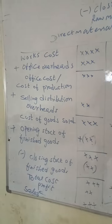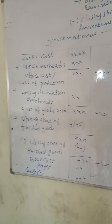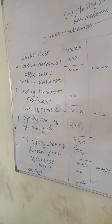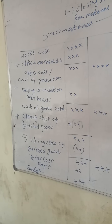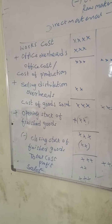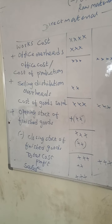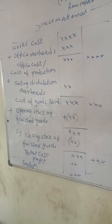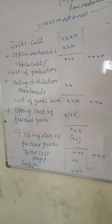To works cost, we add office overheads to get office cost, which is also the cost of production. Then selling and distribution overheads are added to get the cost of goods sold. To that, we add opening stock of finished goods and deduct closing stock of finished goods. You will get total cost, also known as cost of sales.